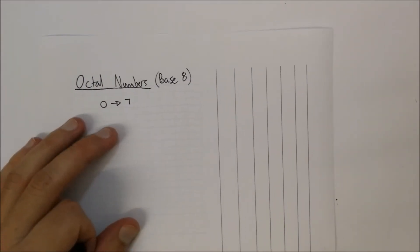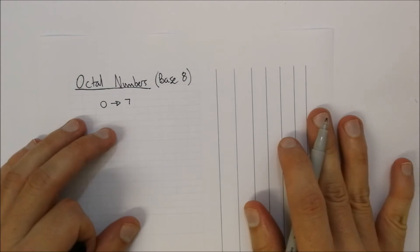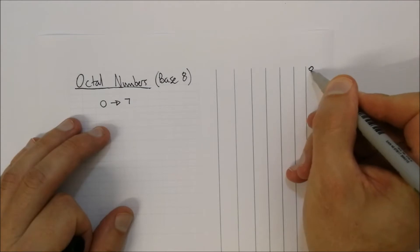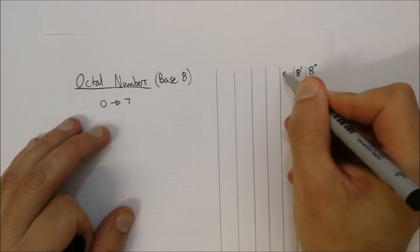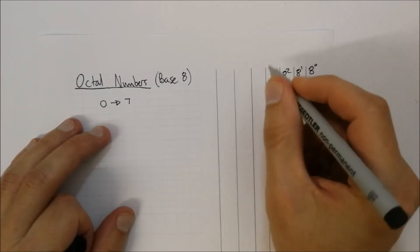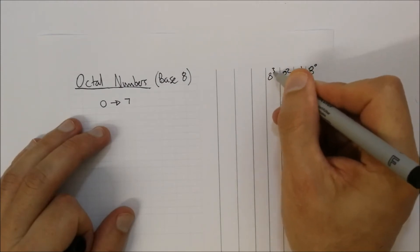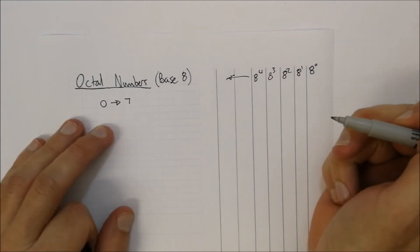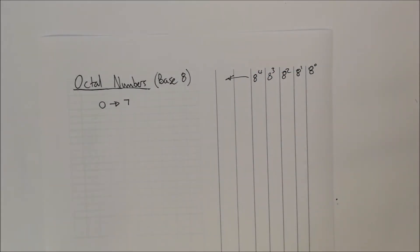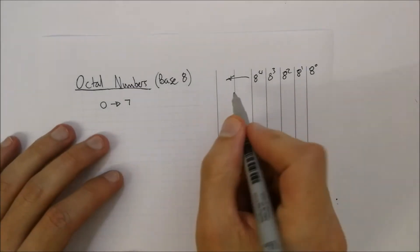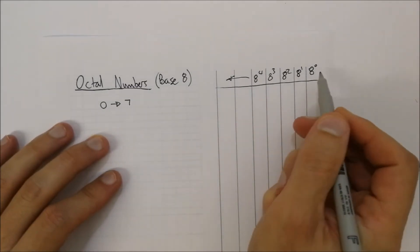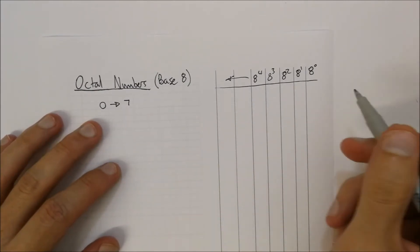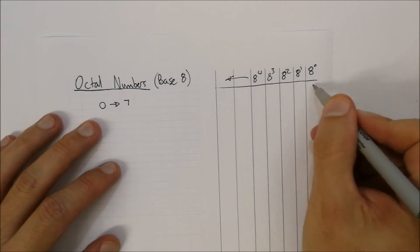Using the same table format as before, you're going to be looking at 8 to the power of 0, 8 to the power of 1, 8 to the power of 2, 8 to the power of 3, 8 to the power of 4, and it goes up to 8 to the power of infinity. The same principles apply — the powers increase with the base being 8.